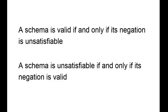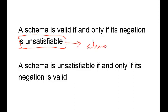A schema is valid if and only if its negation is unsatisfiable. Unsatisfiable means always false. So what do we mean by the negation being unsatisfiable?